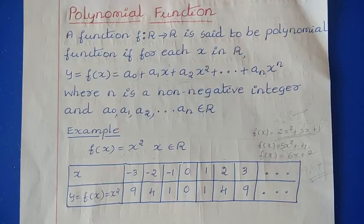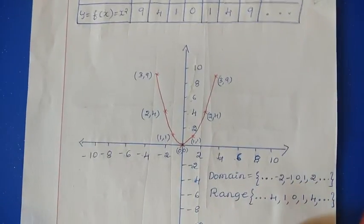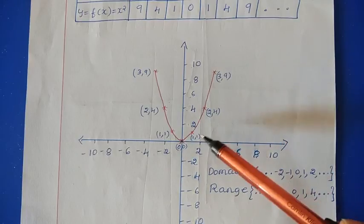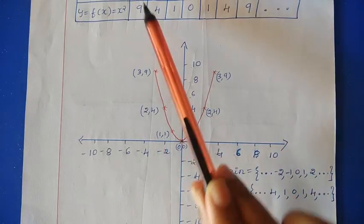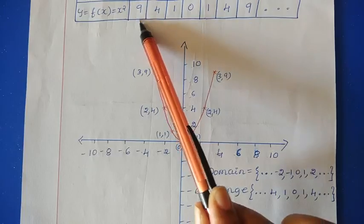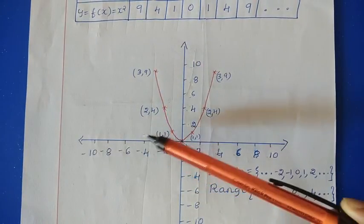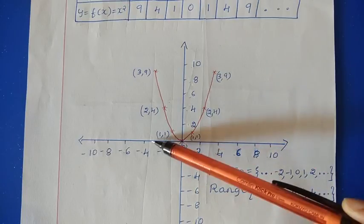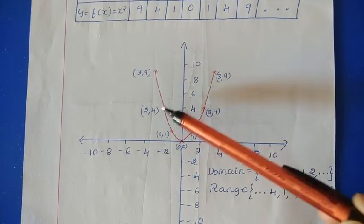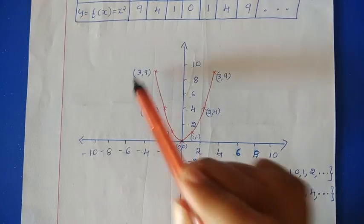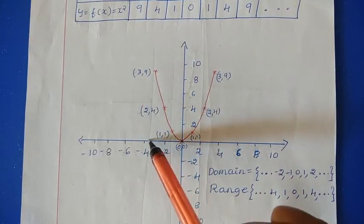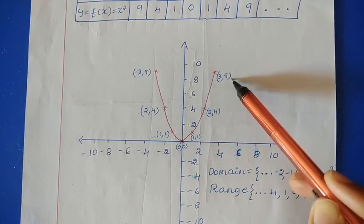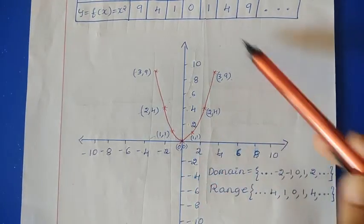The same thing can be represented using a graph. In the graph, the coordinates are: (−3, 9), (−2, 4), (−1, 1), (0, 0), (1, 1), (2, 4), (3, 9). So we can get a parabolic graph in this way.